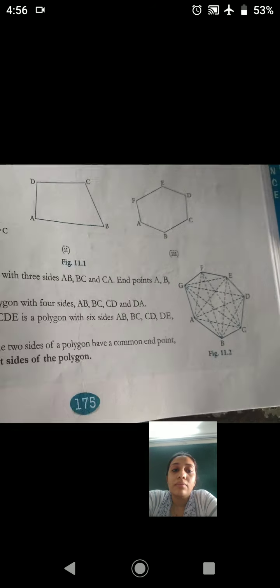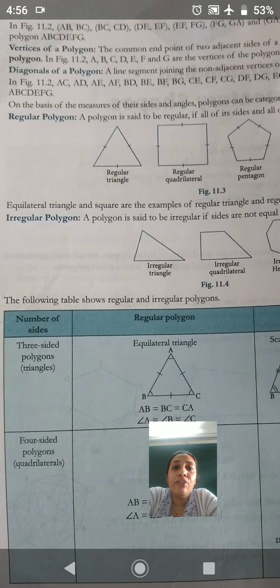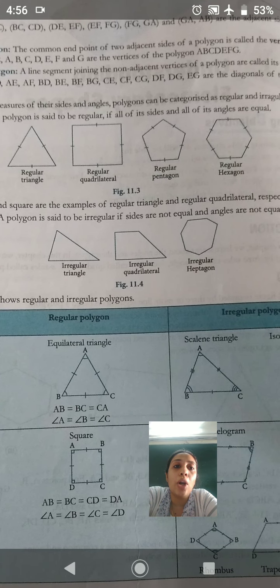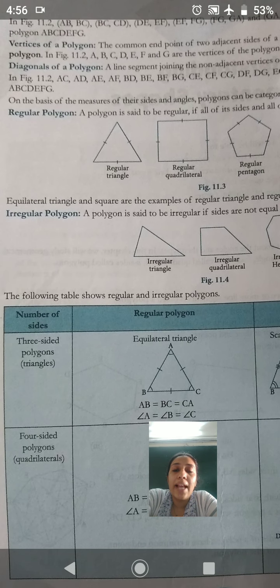Now, in figure 11.2, A, B, C, D, E, F and G are the vertices of the polygon ABCDEFG, right?